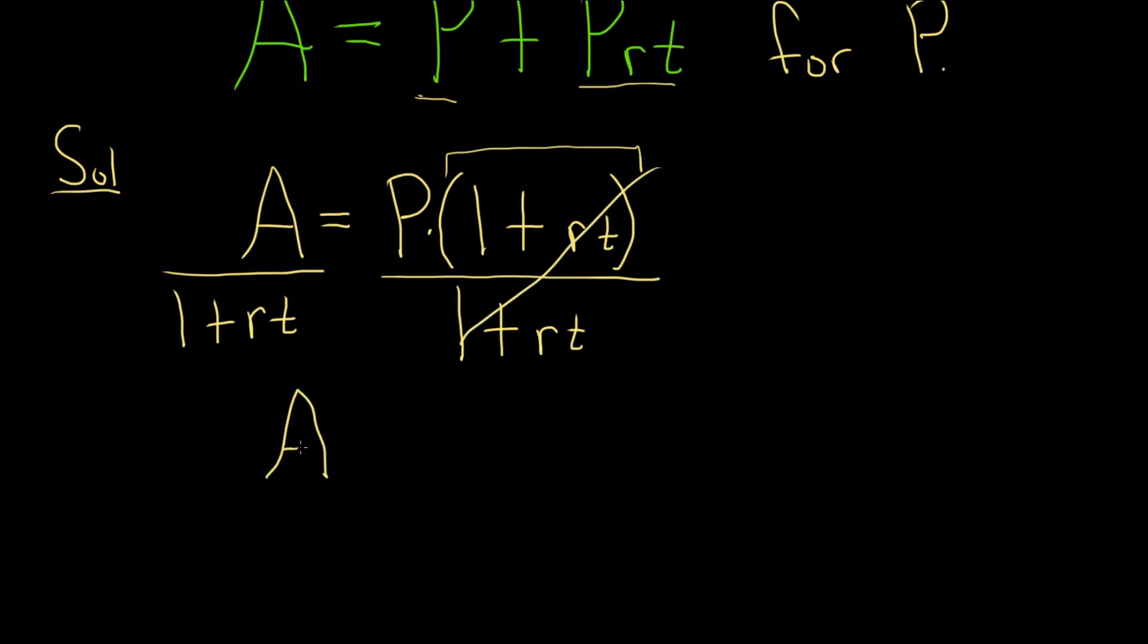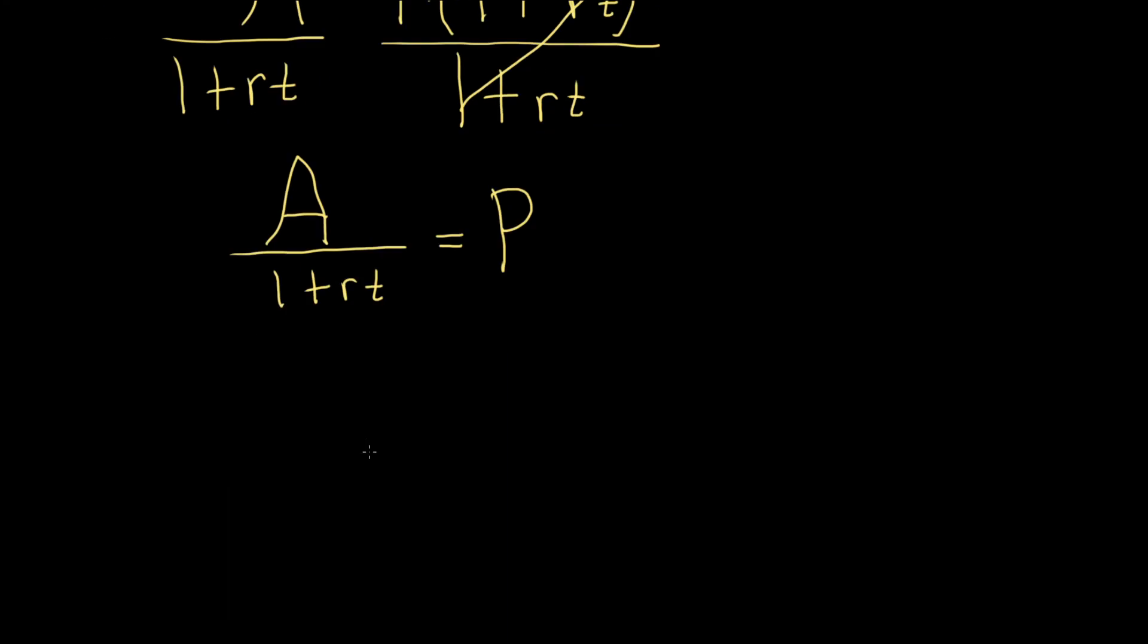So we have A over 1 plus RT, and what's left on the right-hand side is just our P. That's the answer. You can write the P on the left. So P is equal to A over 1 plus RT.